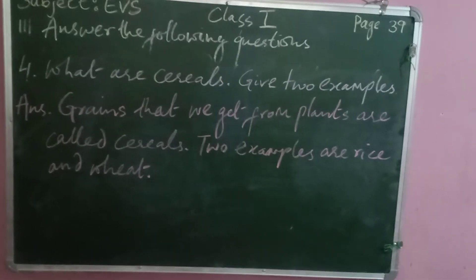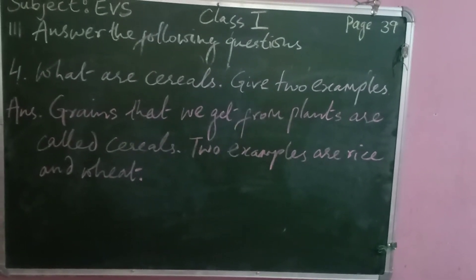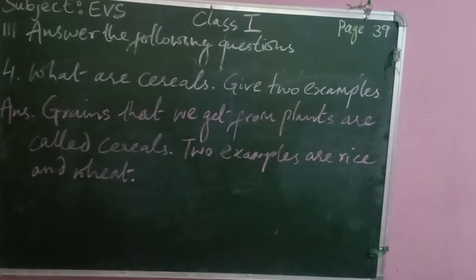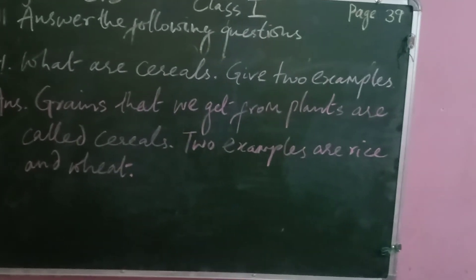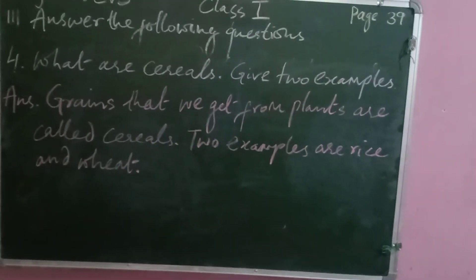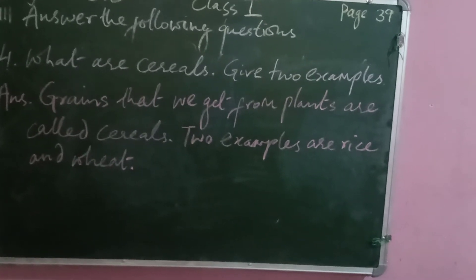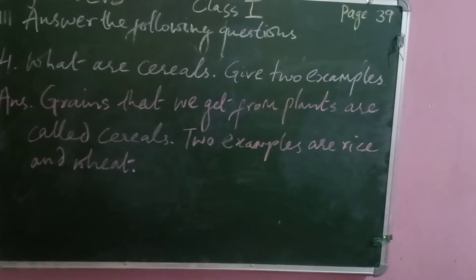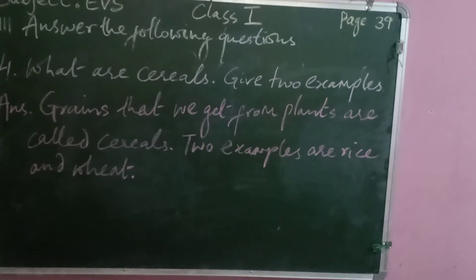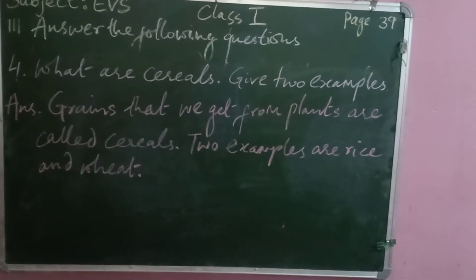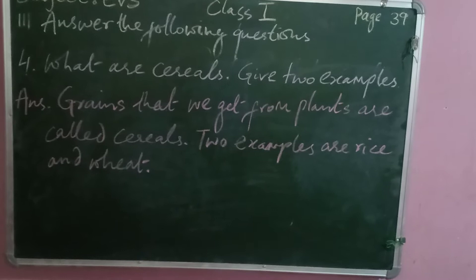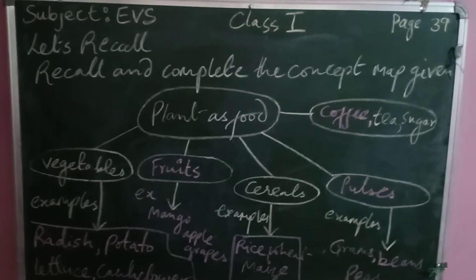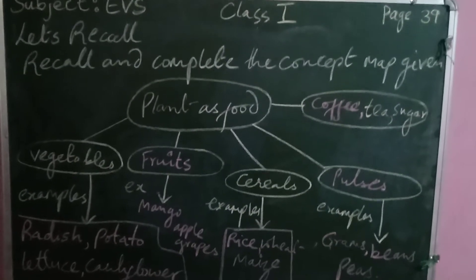Question number four: what are cereals? Give two examples. Write: grains that we get from plants are called cereals. Rice and wheat are examples of cereals.